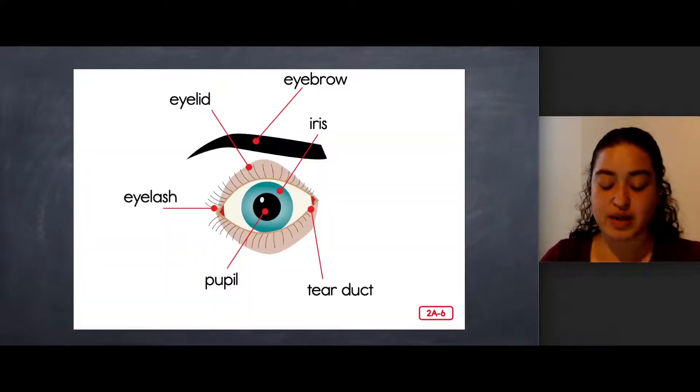All these body parts—eyelids, eyelashes, eyebrows, tear ducts, and eye sockets—do their part to protect your eyes from getting hurt from the outside. But eyes need to be protected from the inside too.